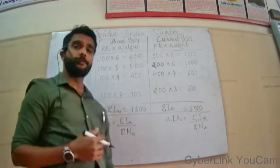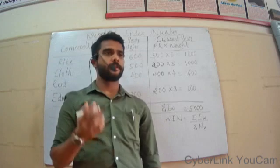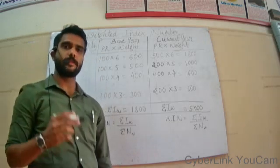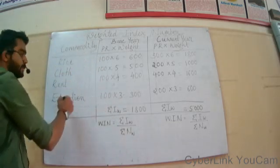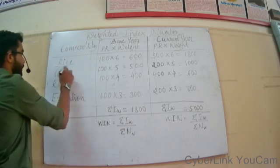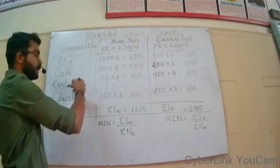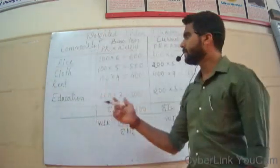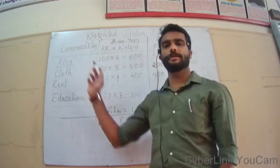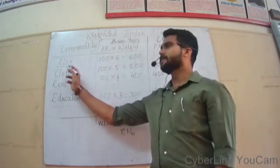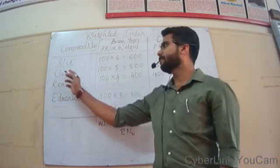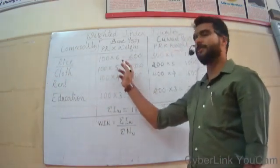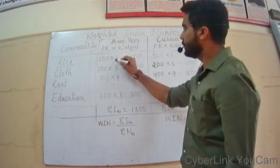First of all, what do you mean by weights or weightage? Weightage is given as per the importance of that commodity. For example, out of all these commodities, which is more important? Food is more important out of all the other three commodities. Therefore, when calculating an index number, more importance is given to the commodity which has more importance in our life. So as rice or food is more important compared to cloth, rent, or education, we give more weightage to the rice commodity.